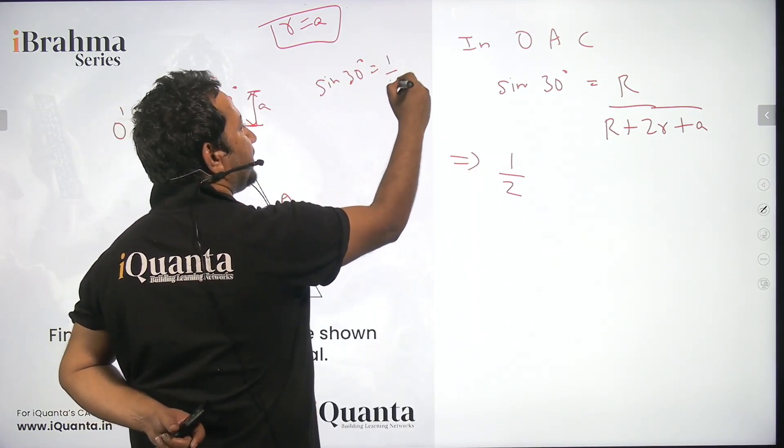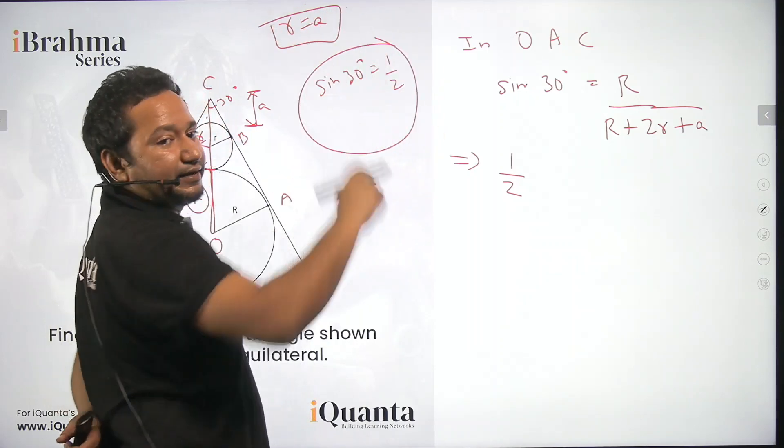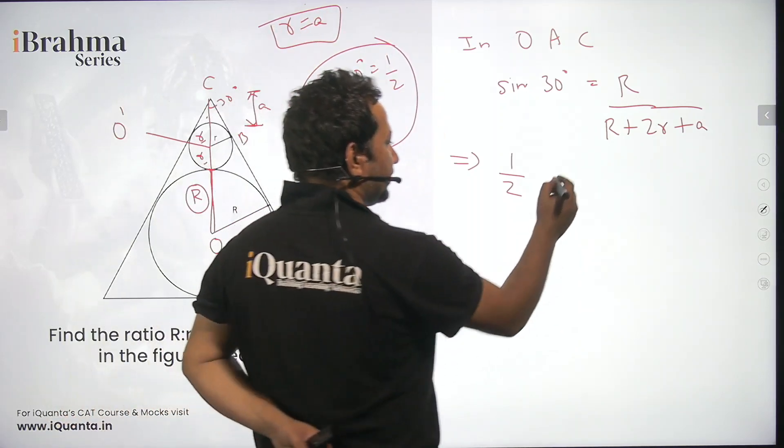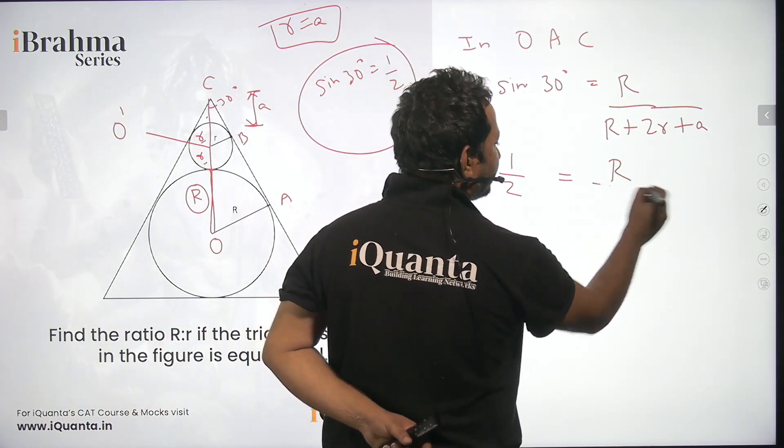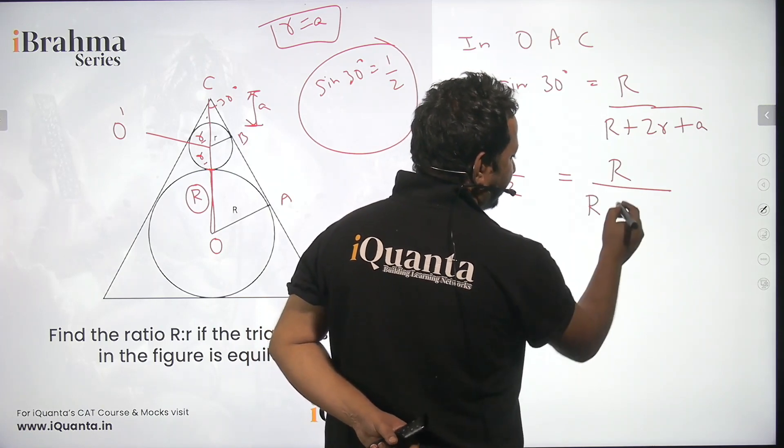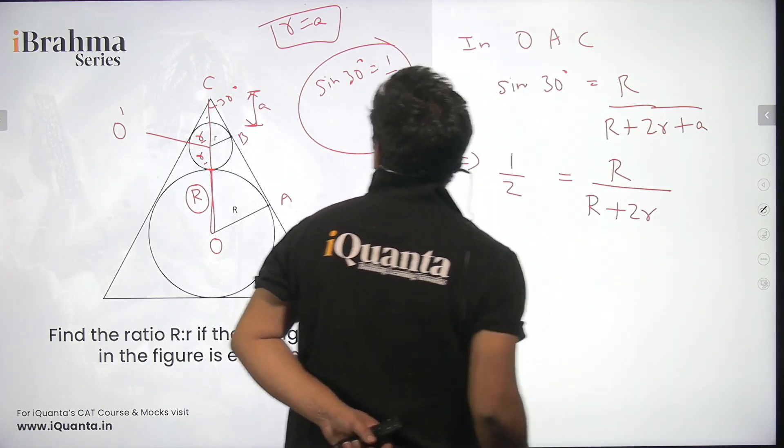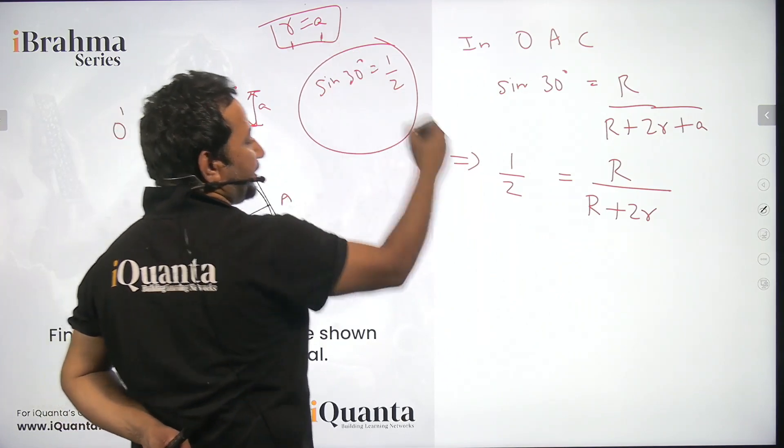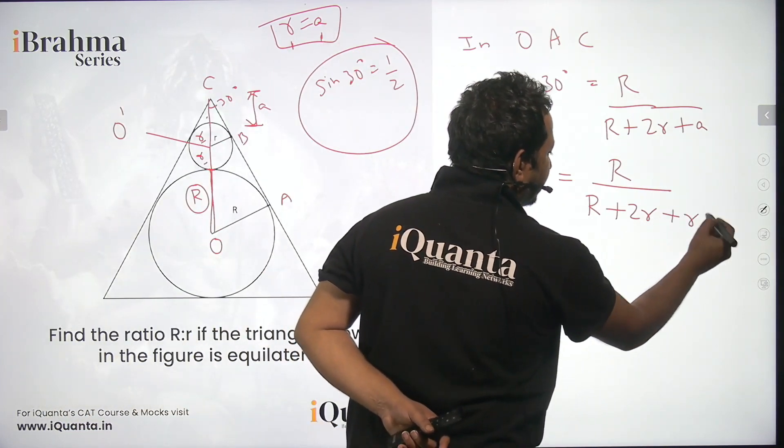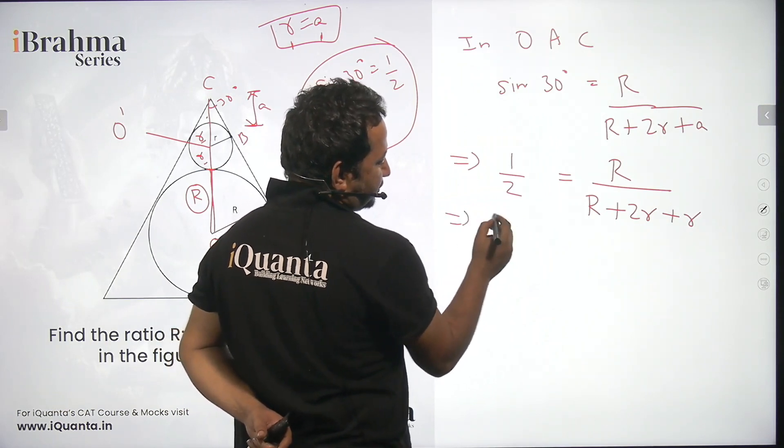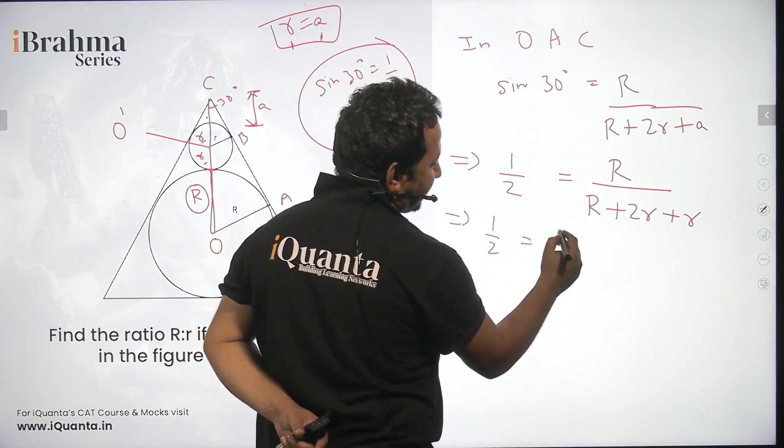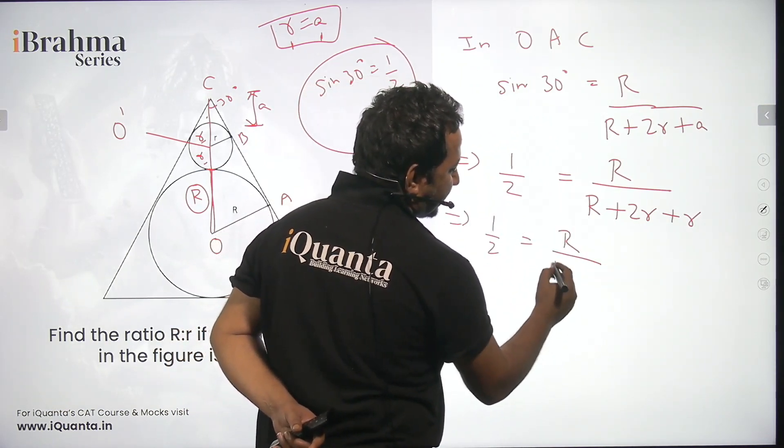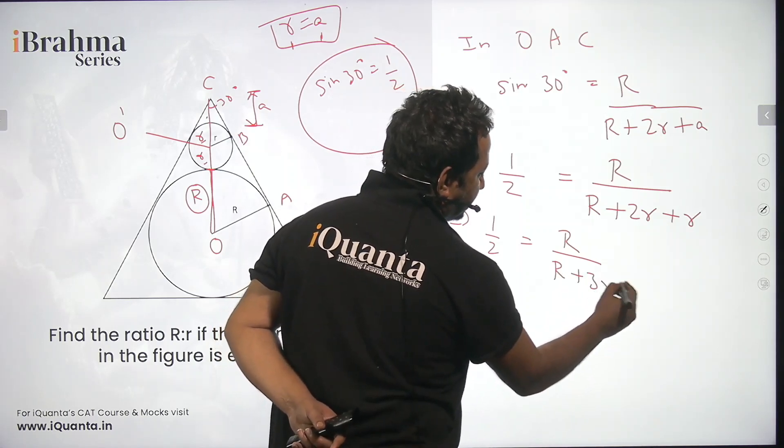Just for the sake of reference I have written it over here, sine 30 is one by two. This will be equal to capital R whole upon capital R plus two times small r. Now I can write small r in place of a over here and this will be plus small r. Solving it, one by two is equal to capital R whole upon capital R plus three r.